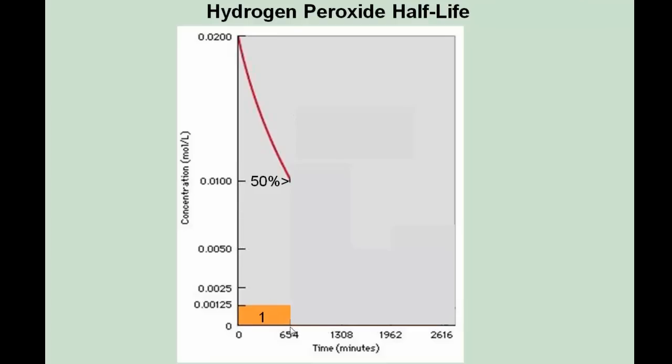Now predict what would happen after another half-life. Again, the definition of half-life is the time it takes for a substance to decrease to half from a previous value. If we're now starting at 0.01 and we wait another 11 hours, we'll be at 0.005, or 25% of the original value.